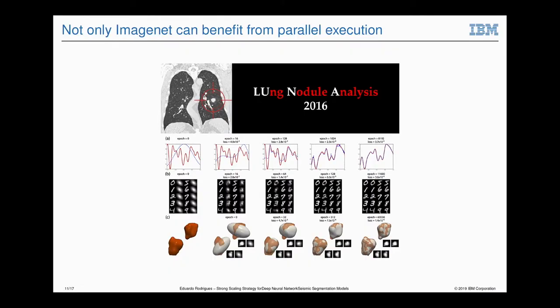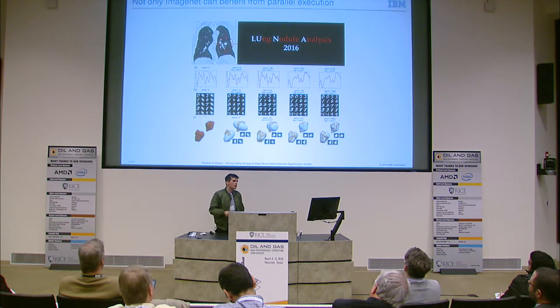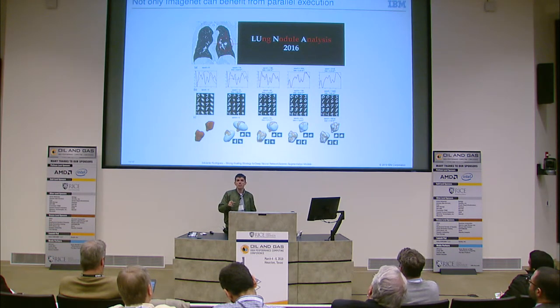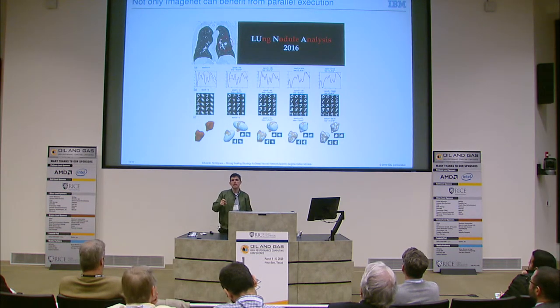However, previous work we did showed that some models actually benefit from running in parallel even though the full batch is not that large. We needed a parallel model to run a module generator that would generate examples for another training, where execution would take several days — sometimes weeks — to run, even though the full batch was pretty small.